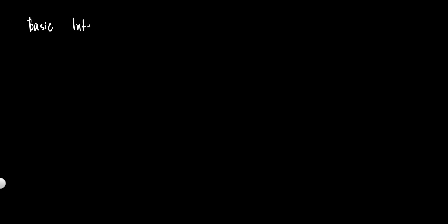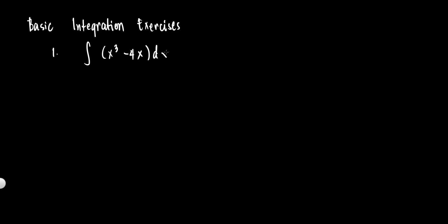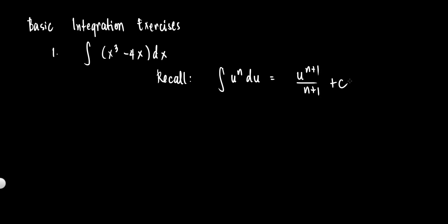Okay, so basic integration exercises. Let's evaluate the following integrals. Number one: the integral of x cubed minus 4x dx. In this integral, we will use the power formula. The power formula states: the integral of u to the n du is equal to u to the n plus 1, over n plus 1, plus c, provided that n is not equal to negative 1.